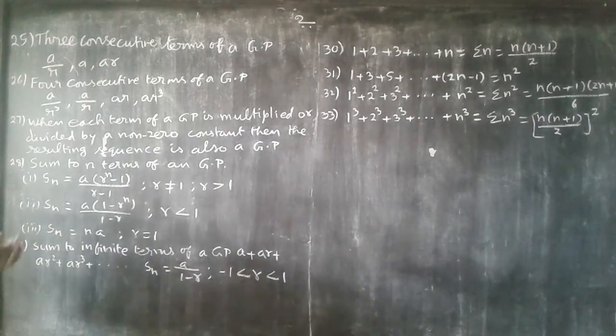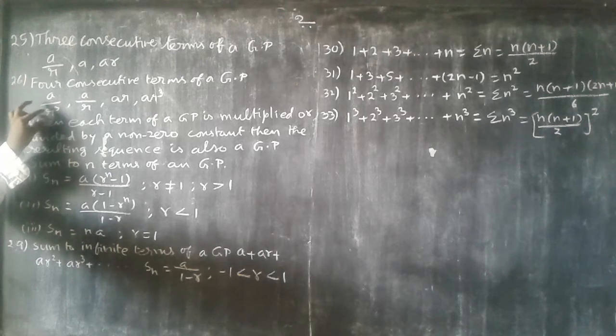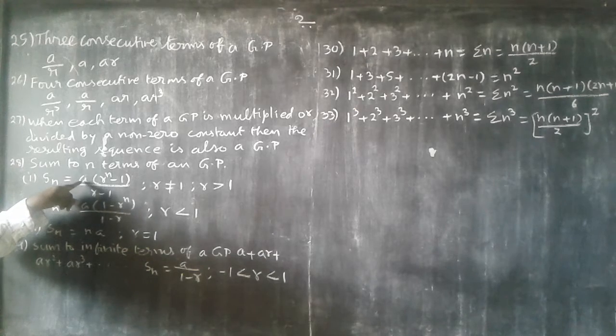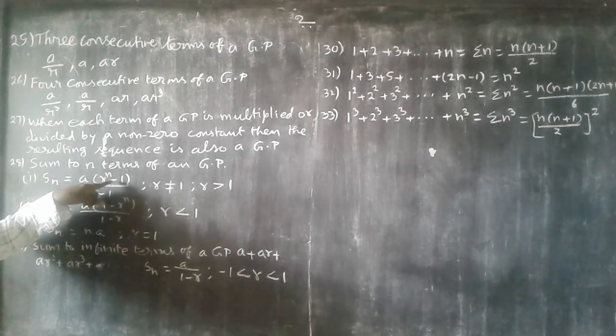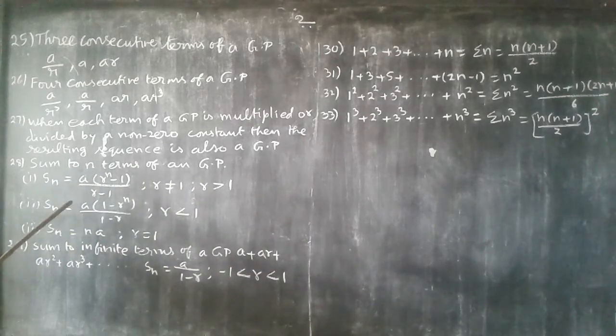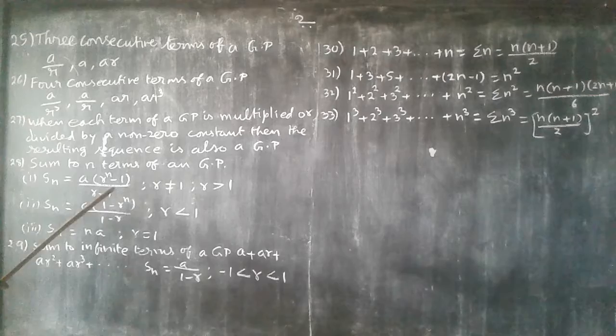S sub n is equal to A into R to the power n minus 1 by R minus 1, where R not equal to 0 and R greater than 1.